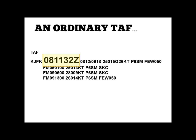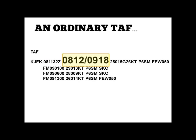Next you'll see the date and time of origin, so this TAF was issued on the 8th of the month at 1132 Zulu. Following the time of origin, you'll see the valid period date and time also in Zulu, so the TAF is valid on the 8th from 12Z through the 9th at 18Z.